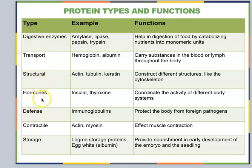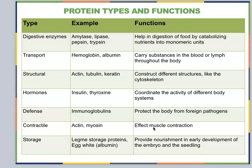Think about a hormone — insulin is a hormone, thyroxin is a hormone, and they are protein structures made up of the building blocks of proteins. Their function is to coordinate the activity of different body systems. Contractile proteins are made up of specific examples like actin and myosin, and what they do is allow for movement — one of the characteristics of all living organisms — by causing the shortening of the distance between two points, which you know as contraction.